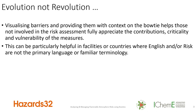The bowtie approach aims to bring a visual, graphical approach and use barrier thinking to provide duty holders and stakeholders with the full context of the flammable atmospheres and the explosions associated with them. So they can more fully appreciate the contributions, criticality, and vulnerability of the measures — whether they be prevention measures to avoid the ignition source, or mitigation or recovery measures to reduce the effects.